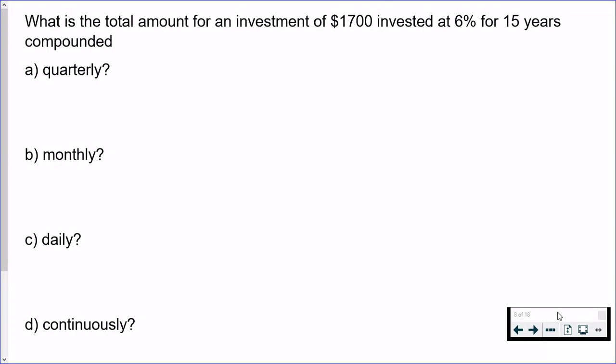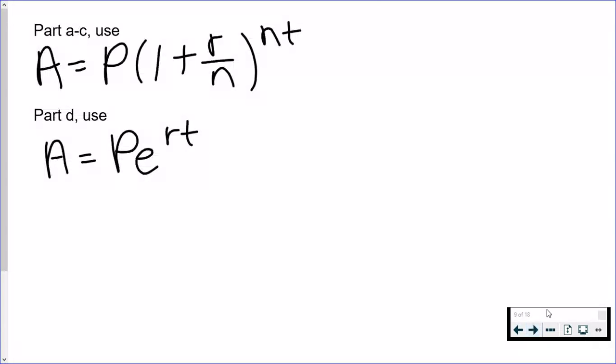either quarterly, monthly, or daily. I'm going to use a different formula for those than I am for Part D. For A through C, if you're given quarterly, monthly, daily, semi-annually, something like that, you're going to use that first formula on the screen—that's your compound interest formula. If it says continuously, meaning it's not a set amount of times per year, you're going to use this new formula